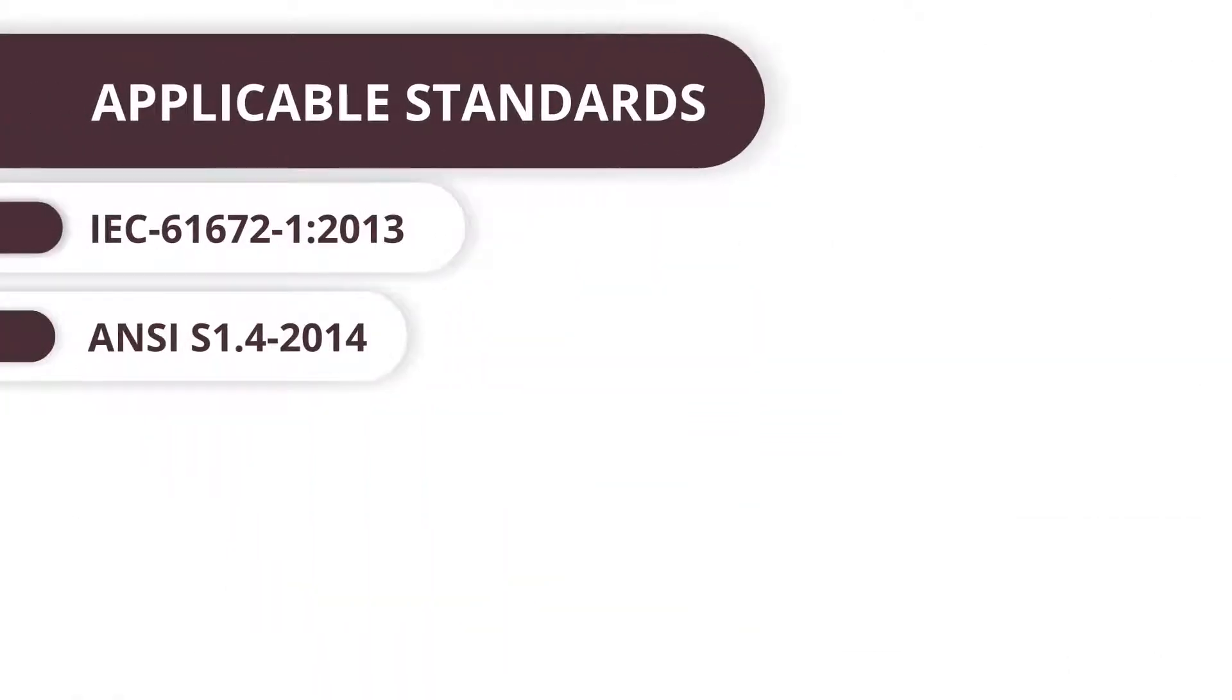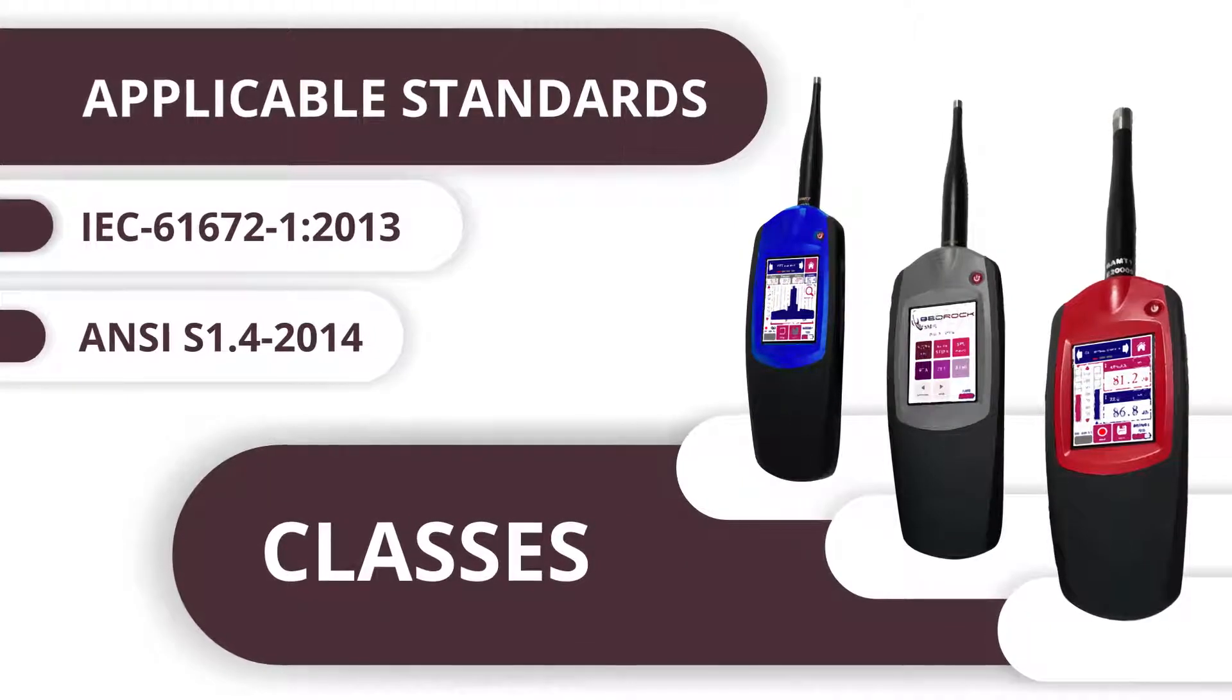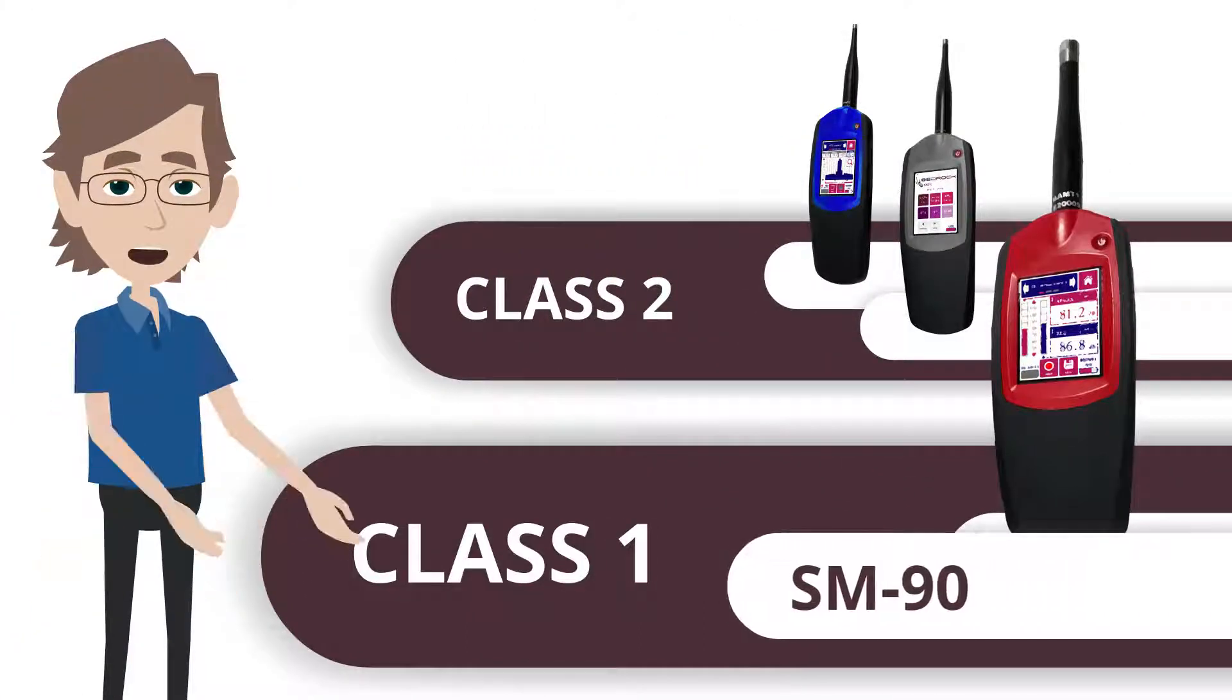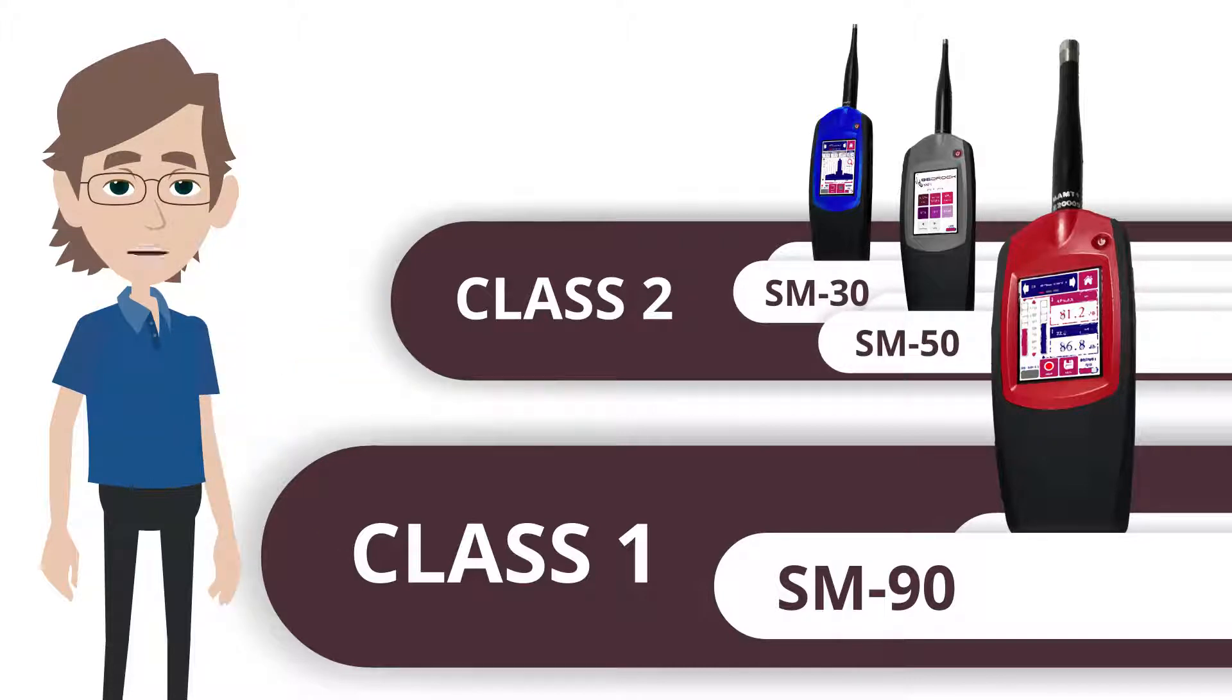According to the applicable standards, sound level meters are categorized into classes depending on various factors that relate to measurement accuracy. The Bedrock SM90 complies with Class 1, the highest categorization. The Bedrock SM30 and SM50 fall into Class 2.